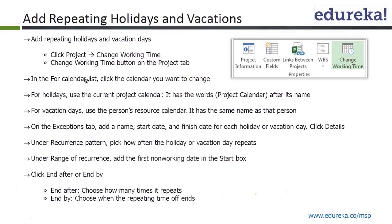For repeating holidays and vacations: go to Project, Change Working Time, and in the For Calendar list click the calendar you want to change. For holidays use the current project calendar; for vacation days use the person's resource calendar. On the Exception tab add the name, start date, and finish date. Under Recurrence Pattern, pick how often the holiday or vacation day repeats. Under Range of Recurrence, set the first non-working date in the start box and click End After.